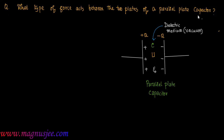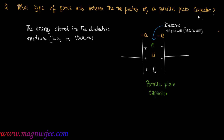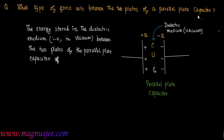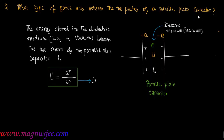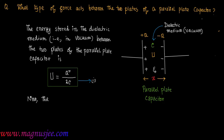C is the capacitance of this parallel plate capacitor and U is the energy stored by this capacitor. The energy stored in the dielectric medium, that is in vacuum between the two plates, is given by U equal Q squared divided by 2C, which is equation 1. X is the separation between the two parallel plates.